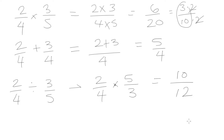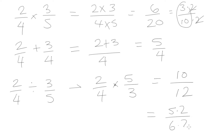That gives us 10 over 12. We can recognize that the numerator and the denominator have a common factor, and that common factor is 2. So we can write this down as 5 times 2 over 6 times 2, and the 2 at the top and bottom cancel each other out, leaving us with 5 sixths. That is our most simplified form.